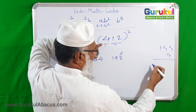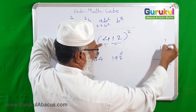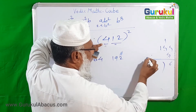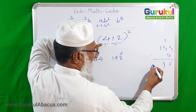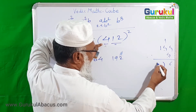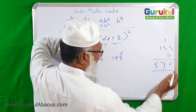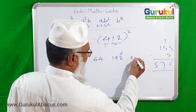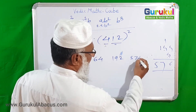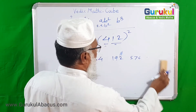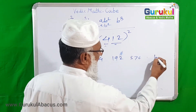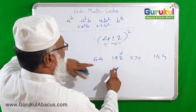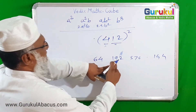Now A times B squared: B squared is 144, multiplied by A which is 4. Computing 4 times 144: 4 times 4 is 16, write 6 carry 1; 4 times 4 is 16 plus 1 is 17, write 7 carry 1; 4 times 1 is 4, plus 1 is 5. So A times B squared is 576. Finally B cubed: 12 cubed is 1728.